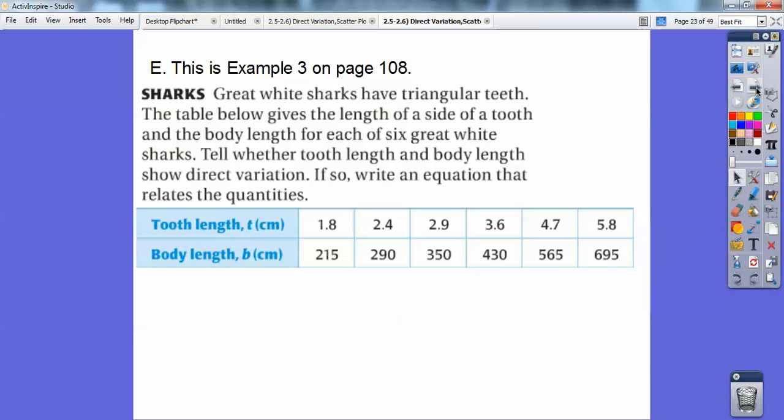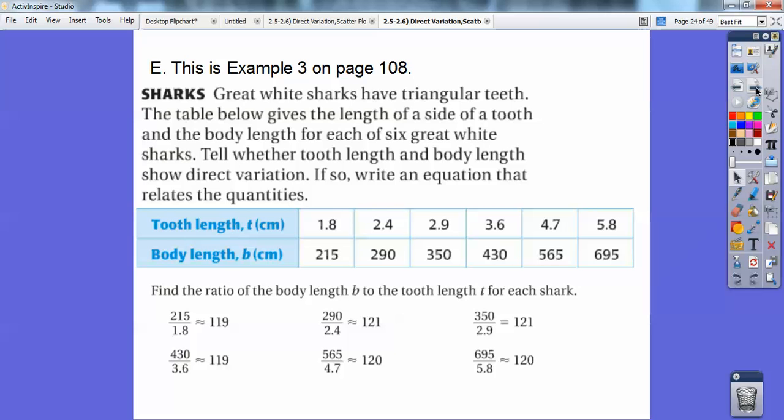So this example is the same sort of thing. Great white sharks have triangular teeth. The table below gives the length of the side of a tooth and the body length for each of the six great white sharks. Tell whether the tooth length and the body length show a direct variation. And if so, write an equation. Well, if the other one was no, I'm guessing this one was yes. So we're going to go ahead and find the ratio of the body length to the tooth length.